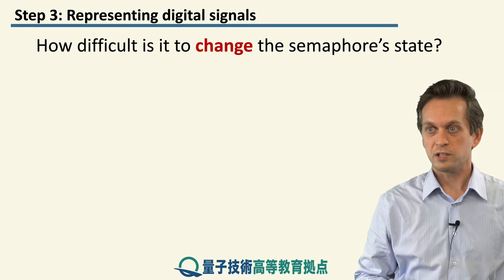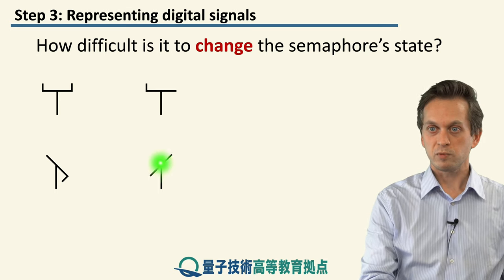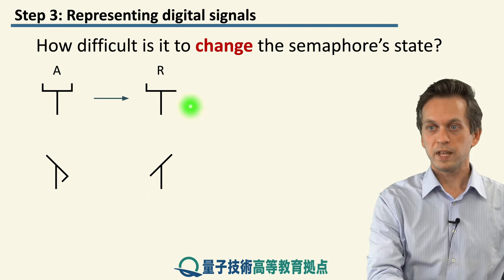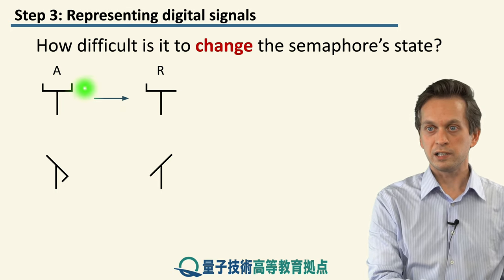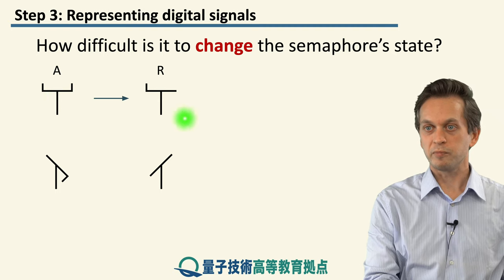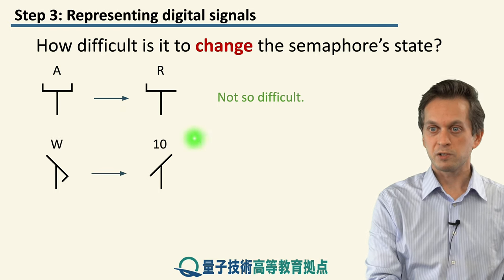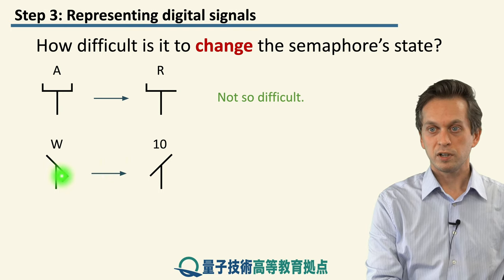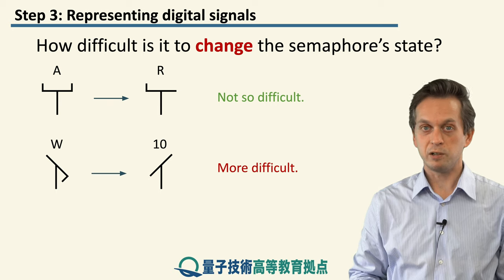What does it take to actually change the state of the semaphore? If you consider going from A to R, it's not so bad, because all you have to do is change the state of one of the little arms and fold it onto the main arm — that doesn't require too much effort. However, if your message requires that you follow W by 10, then you have to do quite a lot of reconfiguring of your arms to set the semaphore into the shape that represents 10. So that requires a lot of effort.